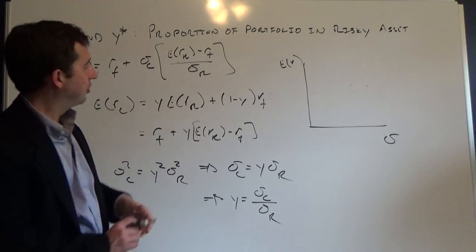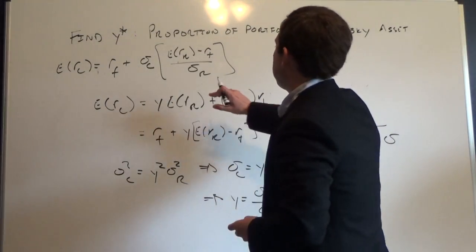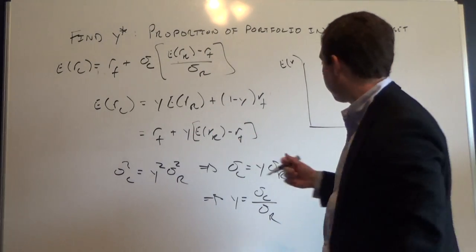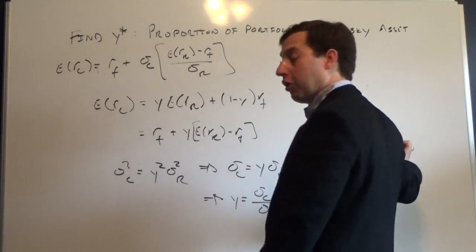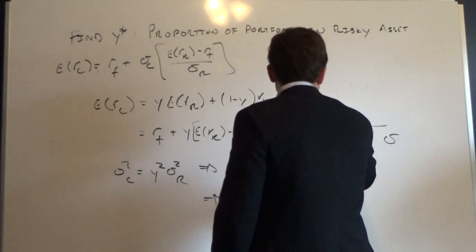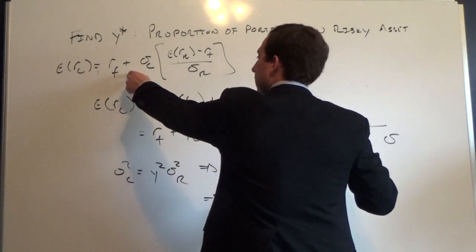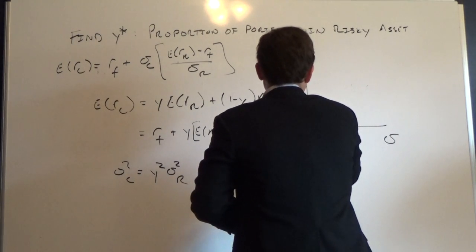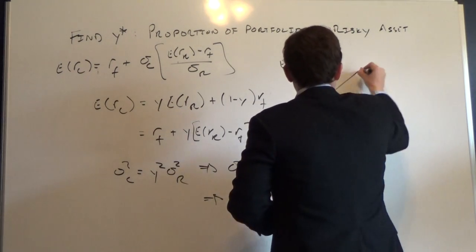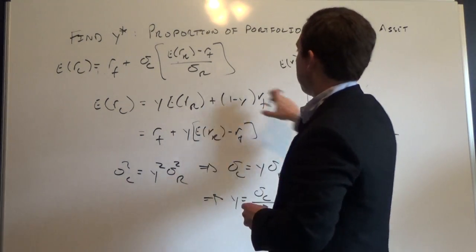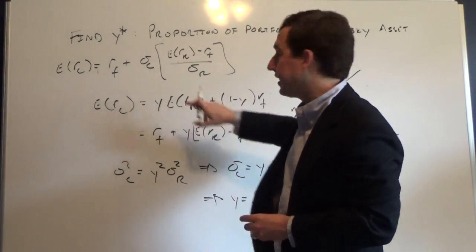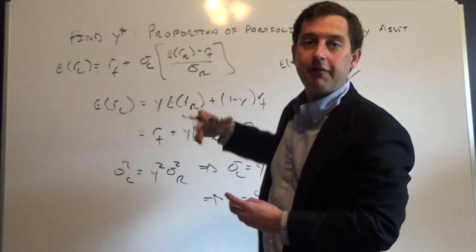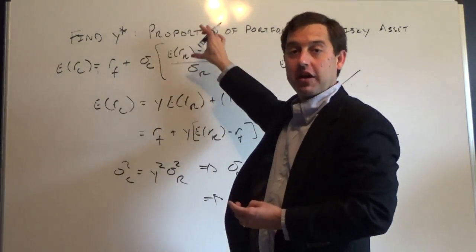If we plot this, when you have 100% of your portfolio in the risk-free asset, your portfolio has no risk — so the intercept on this axis is the risk-free rate. The slope of this line is our reward-to-variability or Sharpe ratio: (E[R_p] − R_f) / σ_p. When Y equals one, we have 100% in the risky portfolio and we're at the point (σ_p, E[R_p]).